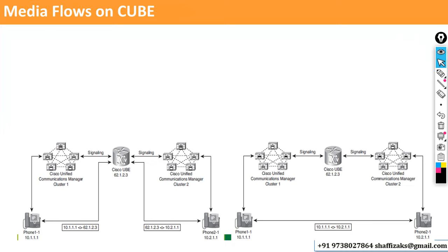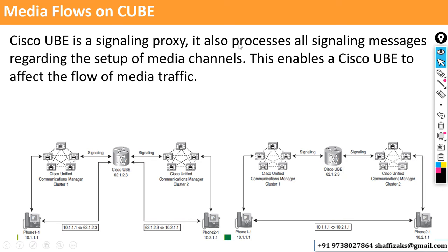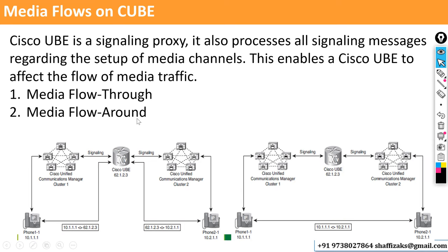Next, media flows on CUBE. We have two media flows. CUBE is a signaling proxy — it processes all signaling messages regarding the setup of media channels, enabling CUBE to affect the flow of media traffic. One is media flow-through and the other is media flow-around. Whenever a call is made, two protocols are used: the signaling protocol — to establish the call — and the streaming protocol (RTP) — which carries real-time voice once the call is established. That is the media.